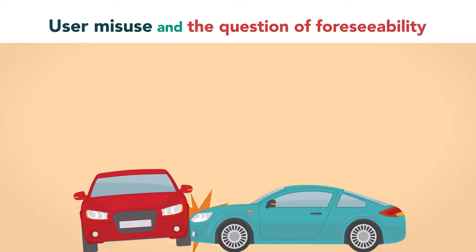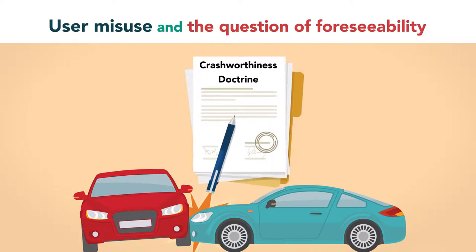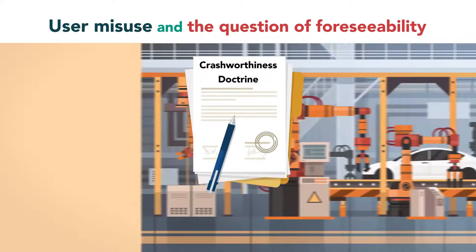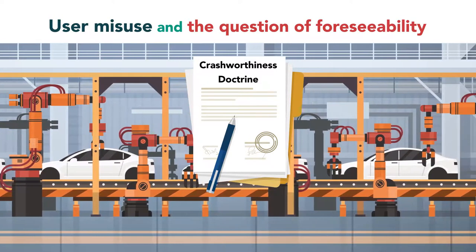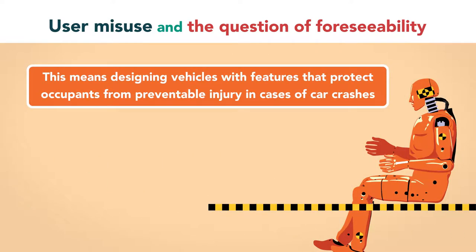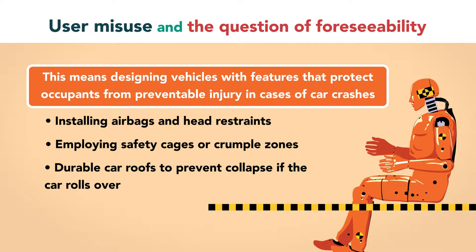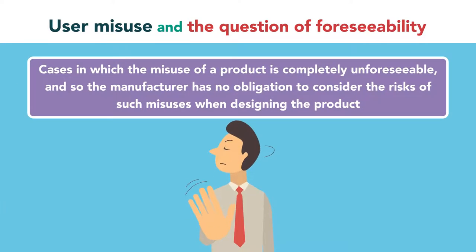While cars are not intended to be used in a way that involves collisions, the law requires car manufacturers to design cars to be reasonably safe even when such collisions occur. This is known as the crashworthiness doctrine. So, car manufacturers are required to take steps to mitigate injuries in cases of motor vehicle collisions, since such collisions are to be expected even though not intended. In practice, this means designing vehicles with features that protect occupants from preventable injury in cases of car crashes, such as by installing airbags and head restraints, employing safety gauges or crumple zones, and durable car roofs to prevent collapse if the car rolls over. At the other end of the spectrum are cases in which the misuse of a product is completely unforeseeable, and so the manufacturer has no obligation to consider the risks of such misuses when designing the product.